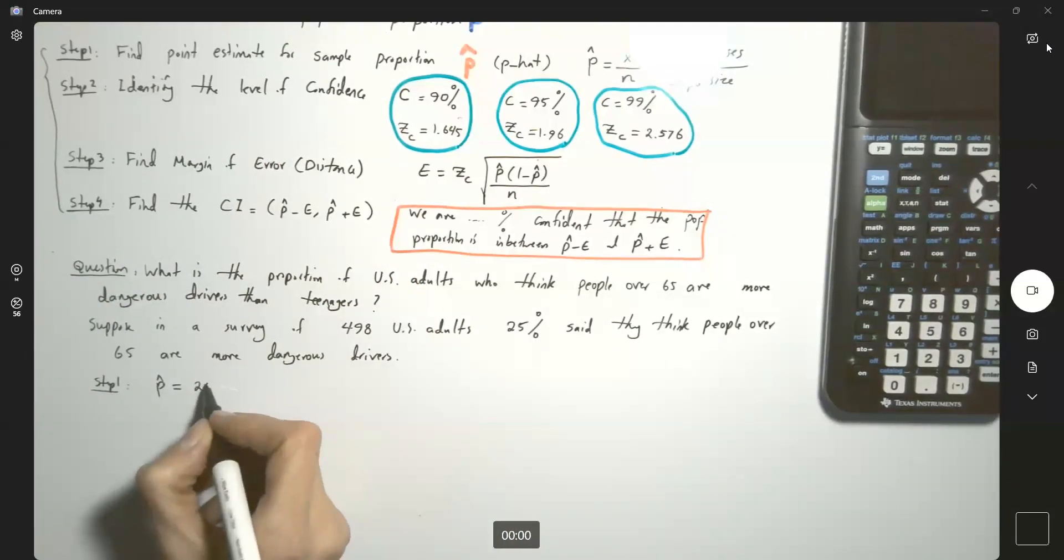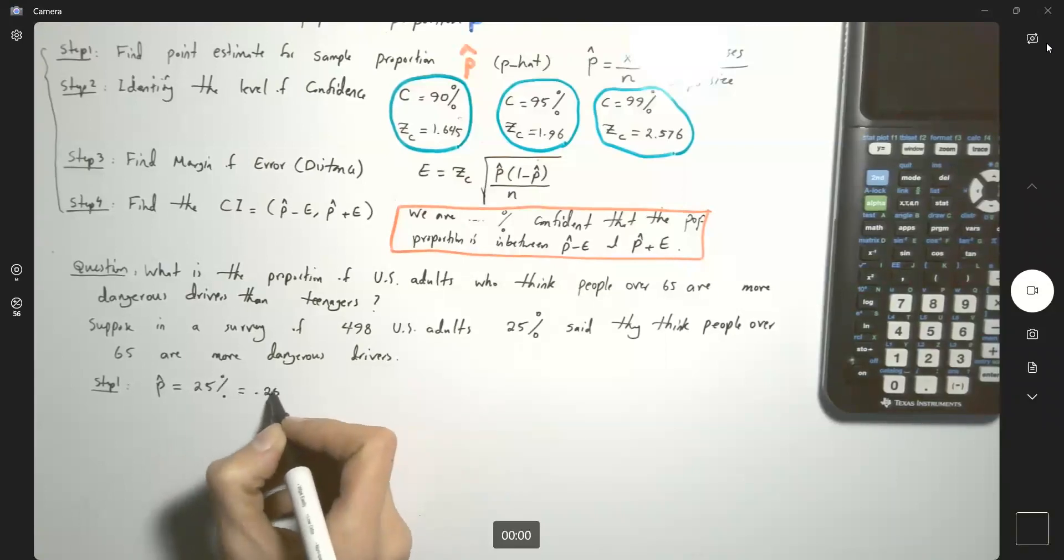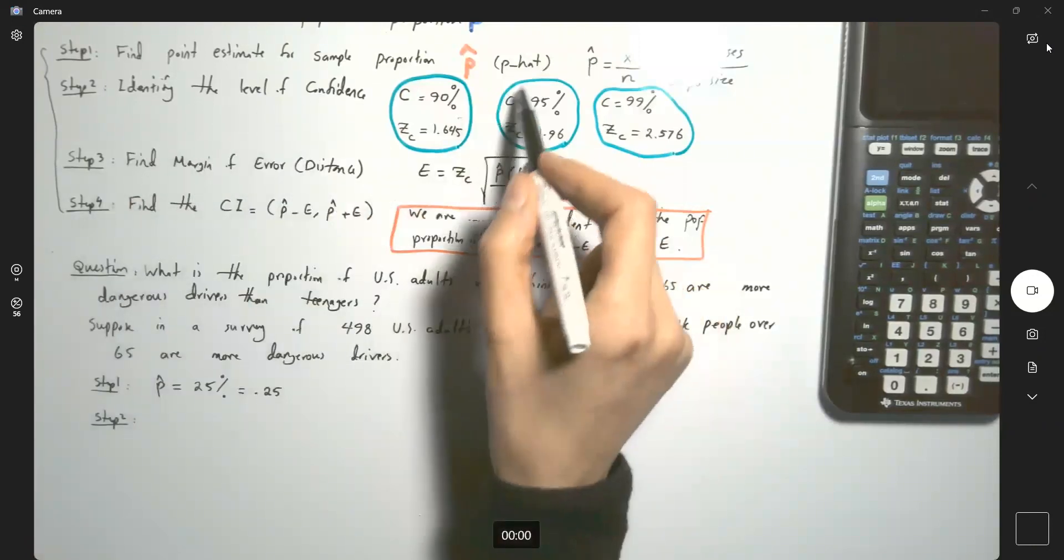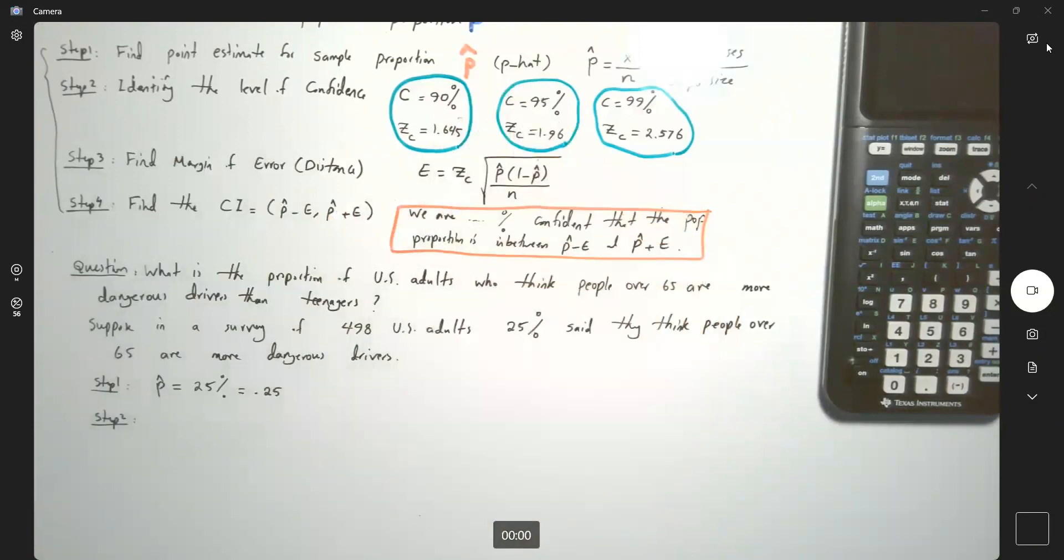my P hat is 0.25. To find the margin of error, in the third step, the margin of error is equal to ZC times square root of P hat times 1 minus P hat divided by N.